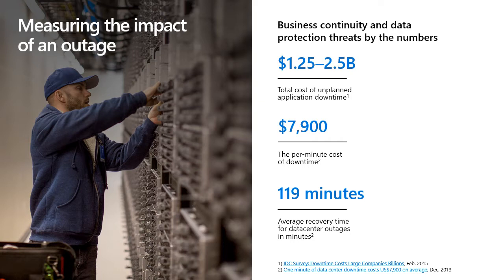Think about the per-minute cost of that downtime. Apart from the revenue lost over four hours, you divide that by the opportunity cost lost every minute. Also consider how long it takes to recover from these outages in minutes. Those are probably the three most important parameters for sizing. If you're going to set priorities on which applications to plan BCDR for, these are the most important parameters.